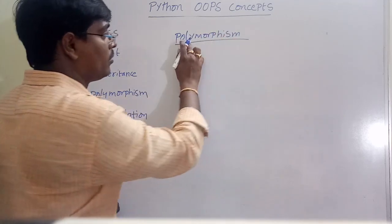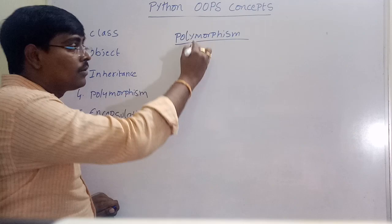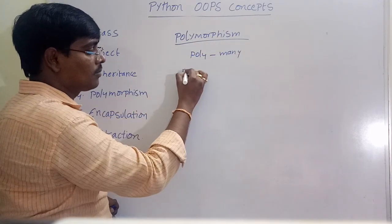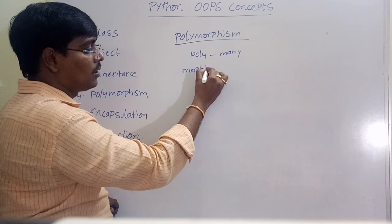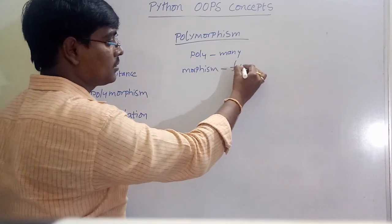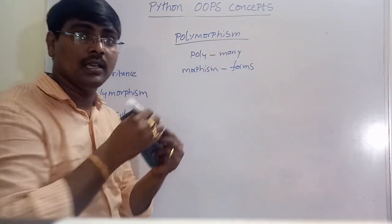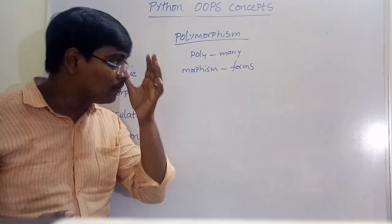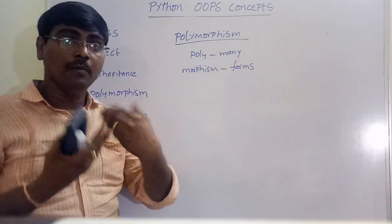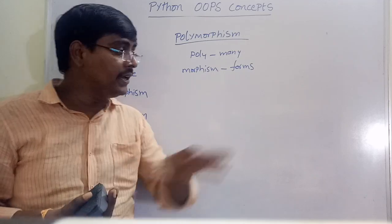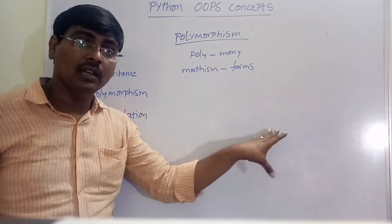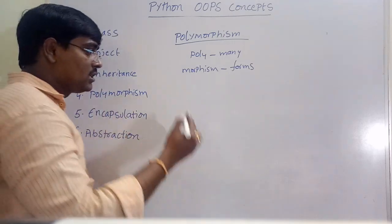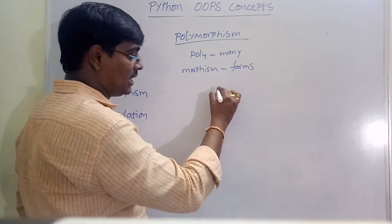Poly means many, morphism means forms — so polymorphism means many forms. That means one method or one variable behaves in different ways in different contexts.